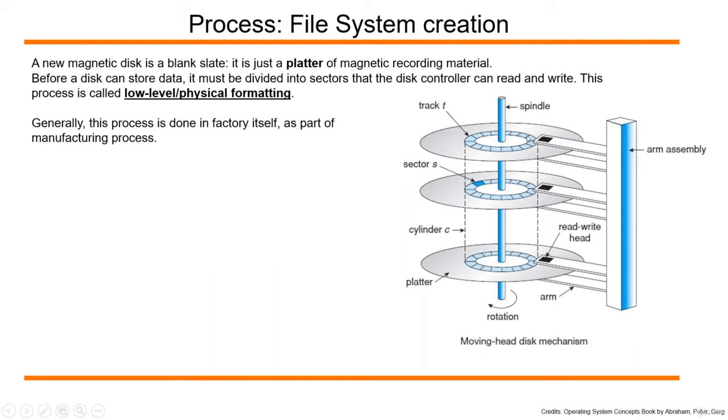It must be divided into tracks, where each track is in turn divided into sectors - for example, 512-byte sectors or 1KB sectors. This process of dividing a disk into tracks and sectors is called low-level formatting or physical formatting. Generally, this process is done in the factory itself as part of the disk manufacturing process.